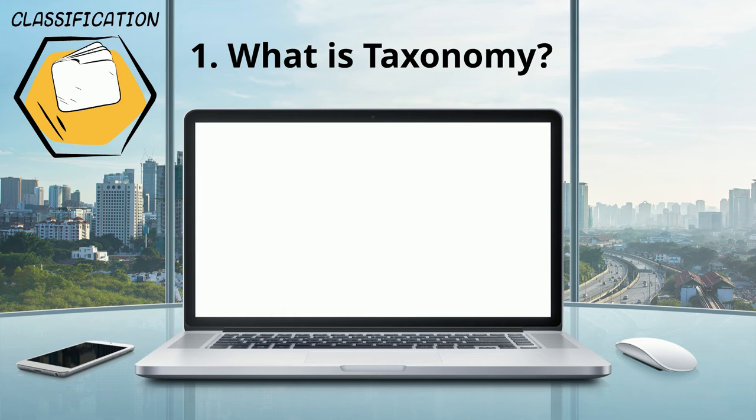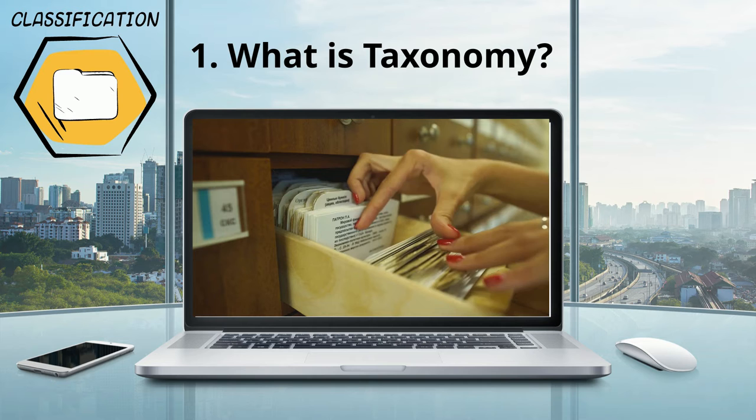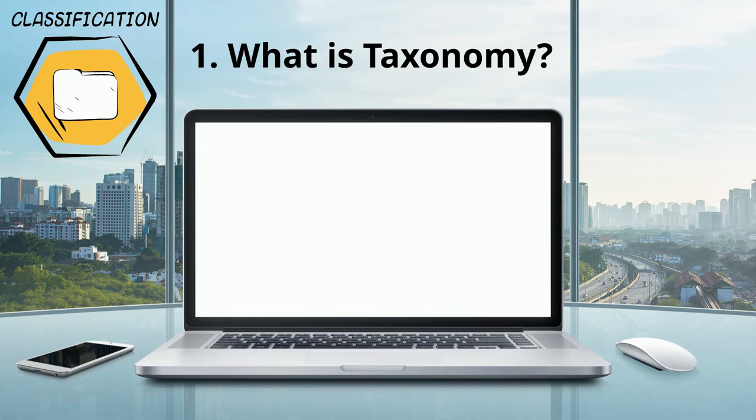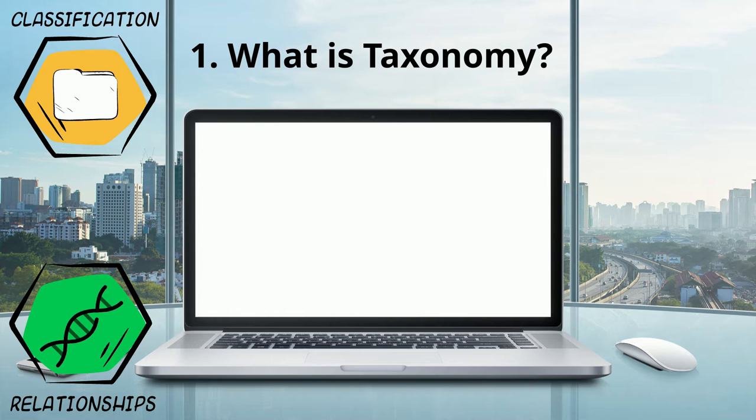Taxonomy is the science of classifying living things. It's essentially the Dewey Decimal system of evolution — so it's like filing. When it comes down to it, the science doesn't just categorise organisms. When you look a little bit deeper, you realise it's telling the story of all life on Earth. And it's a pretty good story.